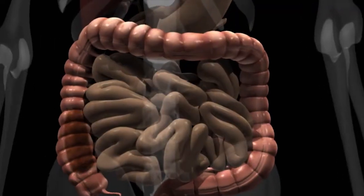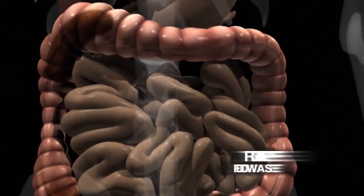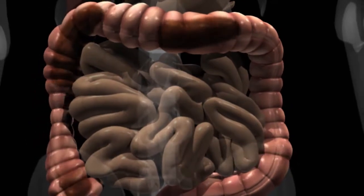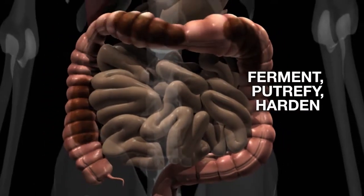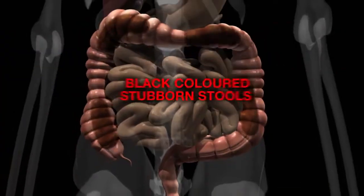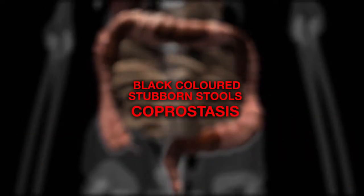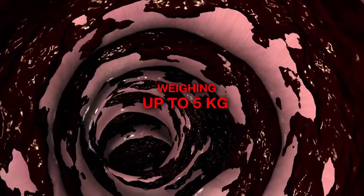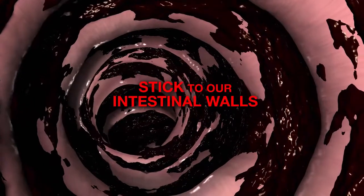Even though our bowel movements may be regular, food waste can still be trapped in the intestinal folds. These tend to ferment, putrefy, and become hardened, resulting in black-colored stubborn stools, coprostasis, weighing up to 5 kilograms that stick to our intestinal walls.